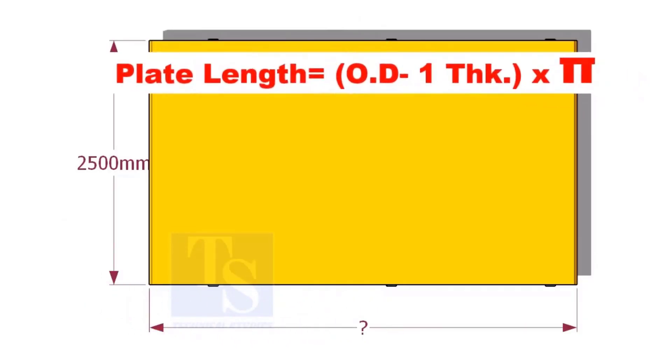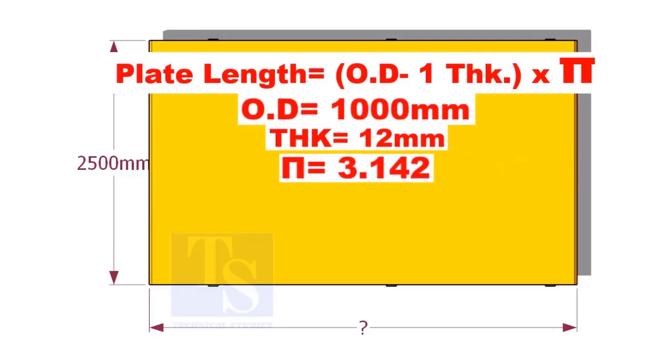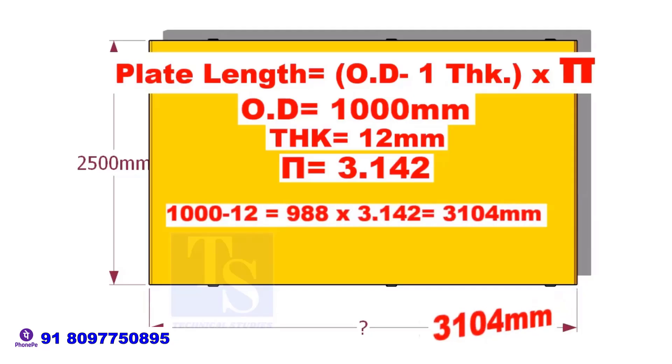To calculate the length, subtract 1 thickness of the pipe from the OD and multiply with the value of pi. 1000 minus 12 is equal to 988 mm, multiplied by 3.142 is equal to 3104 mm.